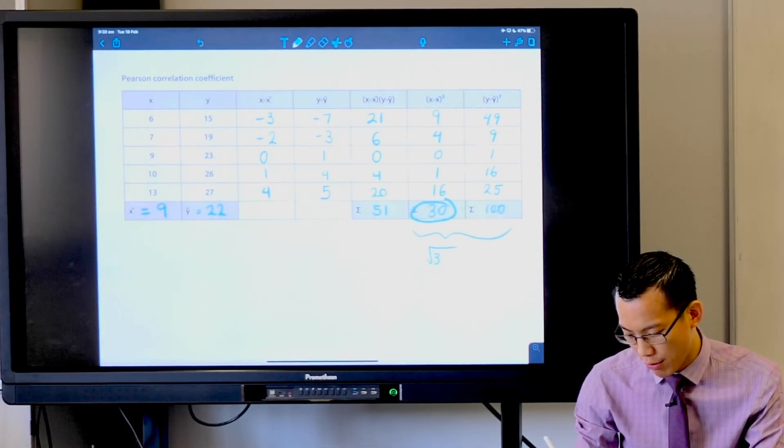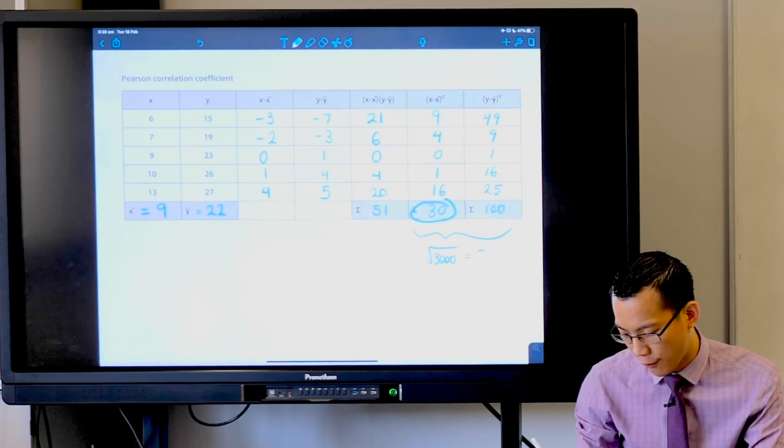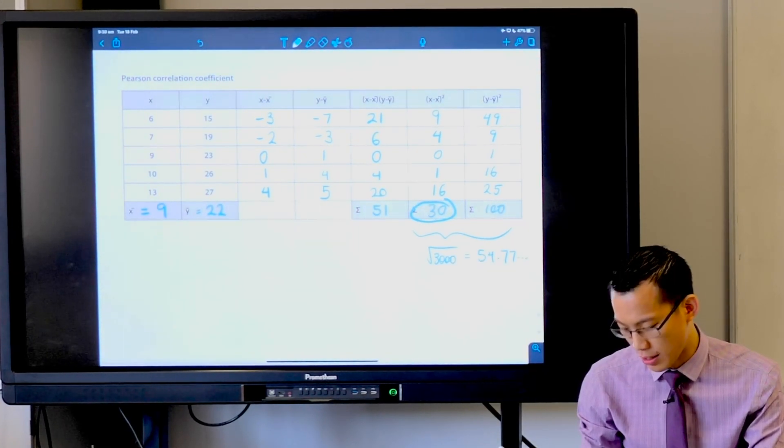Okay, so what we're gonna get out of that, you can write this down underneath here. Yes, so it's the square root of 3000 which is, say that again, 54.77.